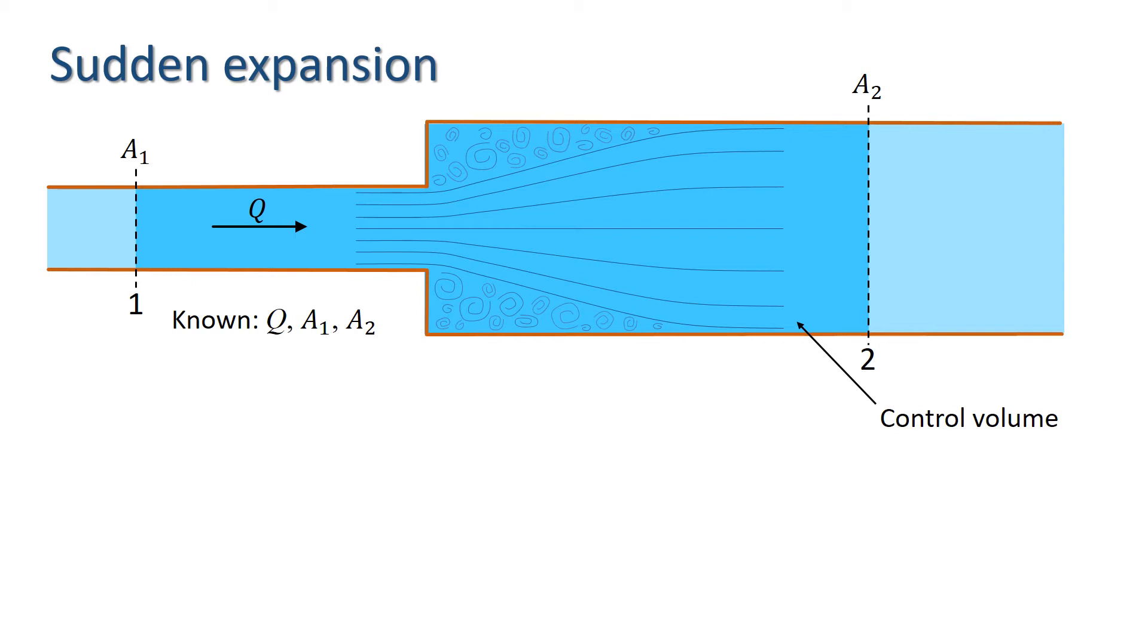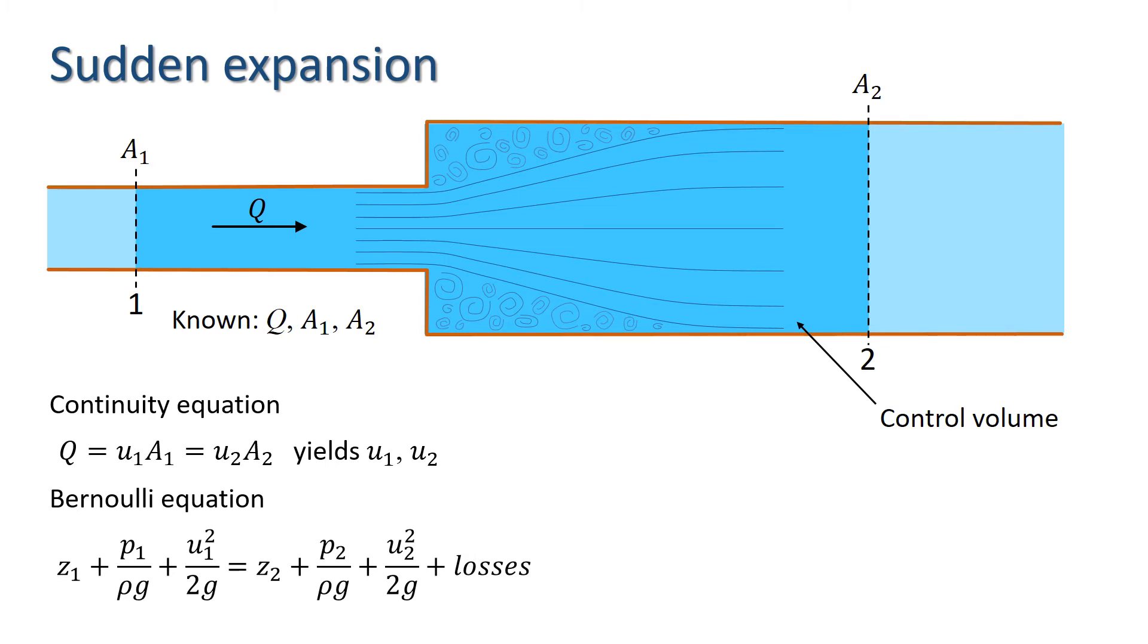I'm going to apply the fundamental equations to find the energy losses. First, I apply conservation of mass or continuity, which yields the velocities up and downstream. Next, I apply the Bernoulli equation, which describes conservation of energy per unit weight, and takes the form shown here. Rearranging this gives an equation for the losses in terms of head losses.